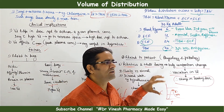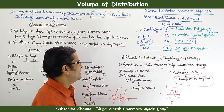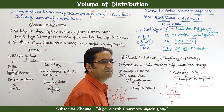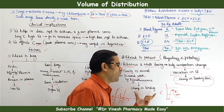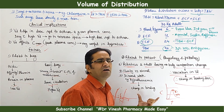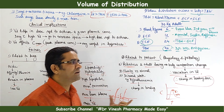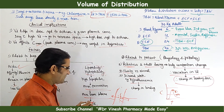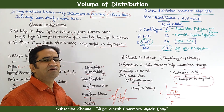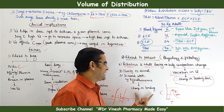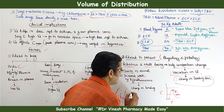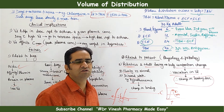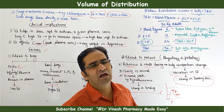Third, disease state: conditions like hypoalbuminemia alter the binding characteristics of drugs that bind to albumin. For example, acidic drugs normally confined to the blood compartment will have altered distribution if a patient has a disease affecting albumin levels, and consequently the volume of distribution will also change.